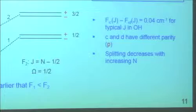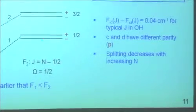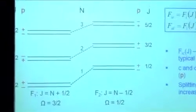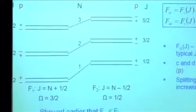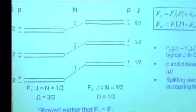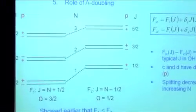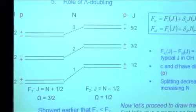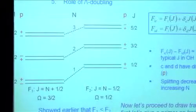Lambda doubling: everywhere there was one line, there are now two — but they have different parity. So you don't double the number of lines present; you just have to be careful about where they're coming from.